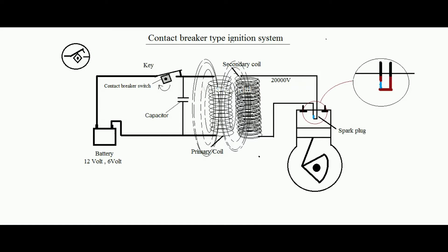The spark used in the engine is actually from the moment when the circuit is opened, not when it is closed. Because when the circuit opens, due to the capacitor, an even higher voltage is created between the electrodes, ensuring better combustion.